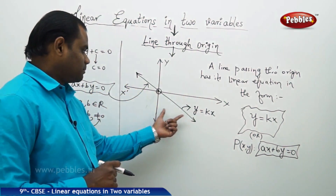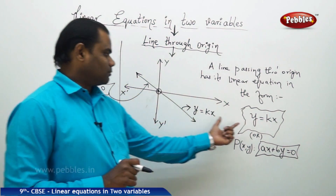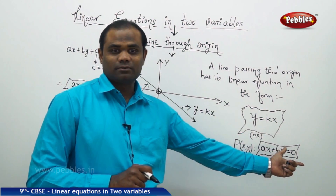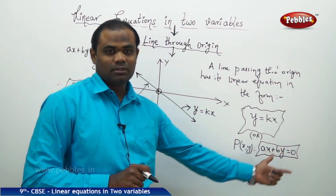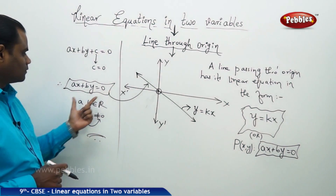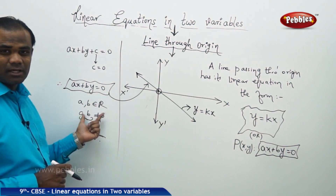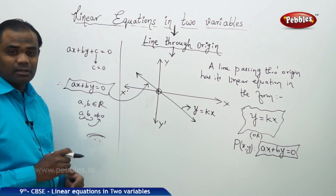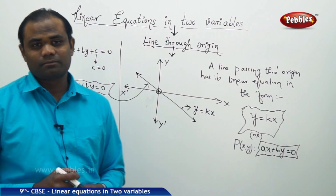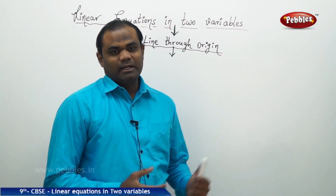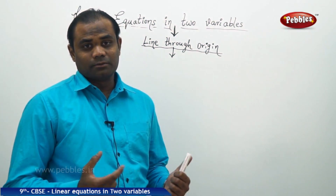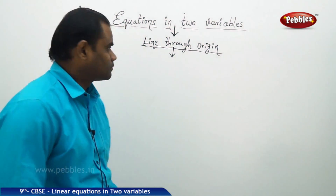The special case of a line passing through origin can be expressed in the form y equal to kx, or ax plus by equal to 0, with the conditions that a and b are real numbers and both non-zero. Let's see an example problem in the continued session.